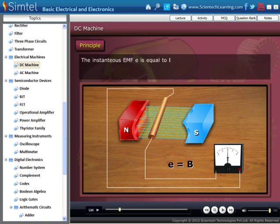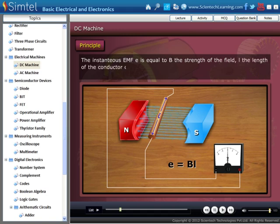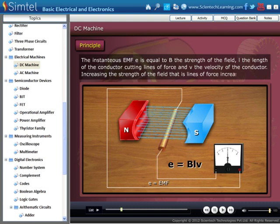The instantaneous EMF E is equal to B, the strength of the field, L, the length of the conductor cutting lines of force, and V, the velocity of the conductor.